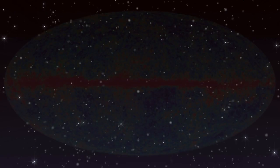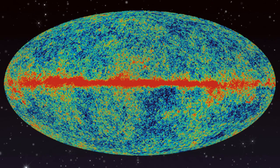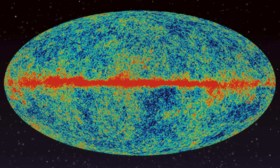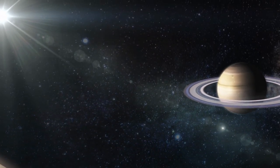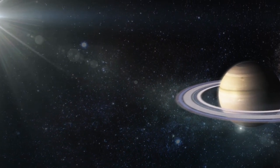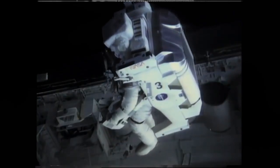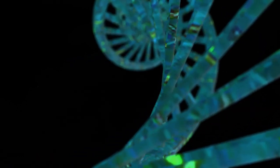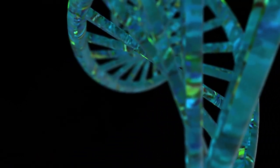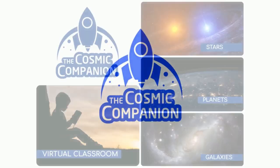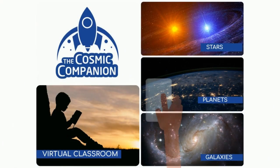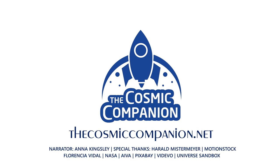Looking deep into the universe, we see backwards in time, and the oldest light in the universe holds secrets to how everything around us will one day end. Meanwhile, stars, planets, and galaxies dance in an intricate ballet, occasionally giving birth to life. We are a fledgling species, just beginning to visit other worlds. We are a way for the universe to understand itself. The Cosmic Companion strives to bring the universe down to Earth, and we depend on your help to make it happen. For information on subscriptions and ways to donate to this program, please visit thecosmiccompanion.net.